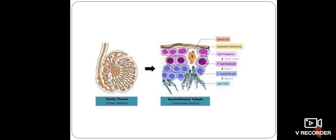This is the structure of the seminiferous tubule. Here the basement membrane is present, from which primary germ cells arise, and Sertoli cells are also seen. In the adult mammal, spermatogenesis is a continuous process which can be divided into two distinct phases: the formation of a spermatid and spermiogenesis.